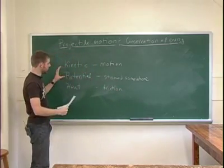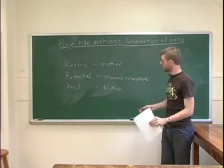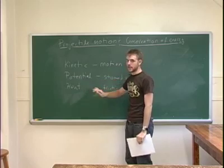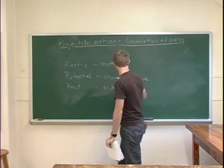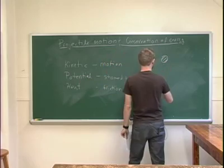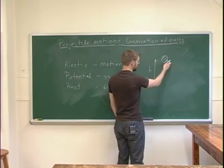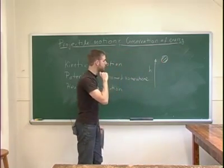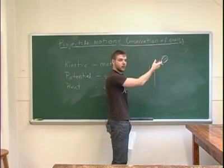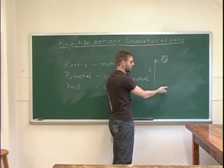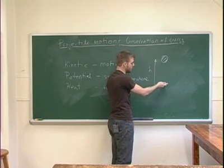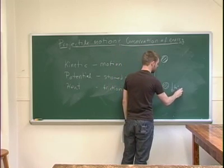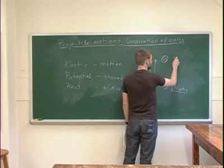Let's consider an example where all these play a role — in fact, they'll all play a role in today's experiment. First, let's consider just kinetic and potential energy without heat. Imagine dropping a ball: you lift it to some height h and let go. Initially it has all potential energy because it's lifted up in a gravitational field. At the end, right before it hits the ground, it's moving at some speed, so it has kinetic energy. Here it has kinetic energy; up there it had potential energy.